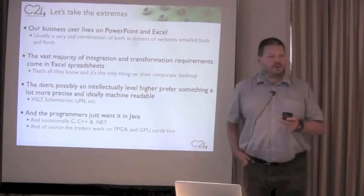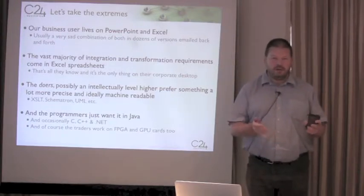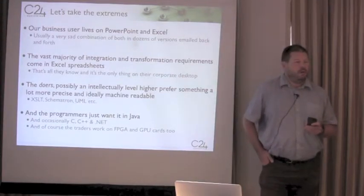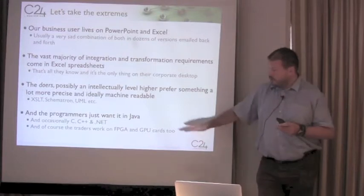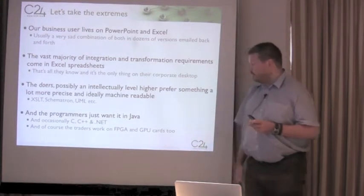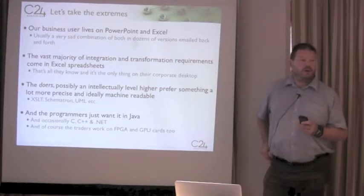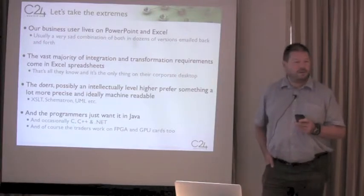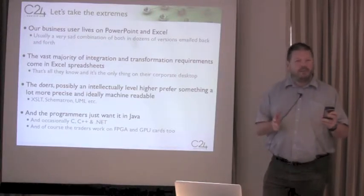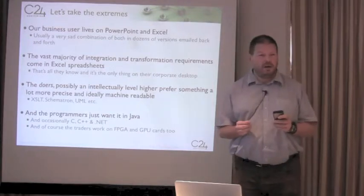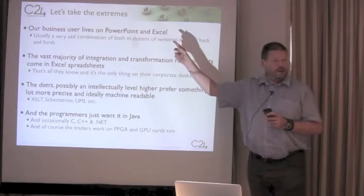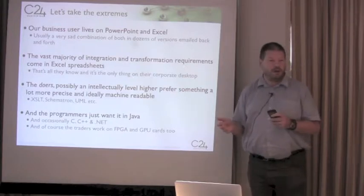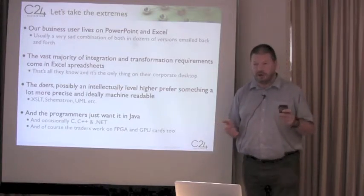If you take the requirements to an extreme: at one end you've got the Java programmers, R programmers, people programming GPU cards and FPGAs — the geeks at the bottom end. At the other end, you've got your business people at the top who tend to view the world in Excel. These are the guys you need to get money out of — whether you're in academia or industry, eventually somebody's paying your bills.